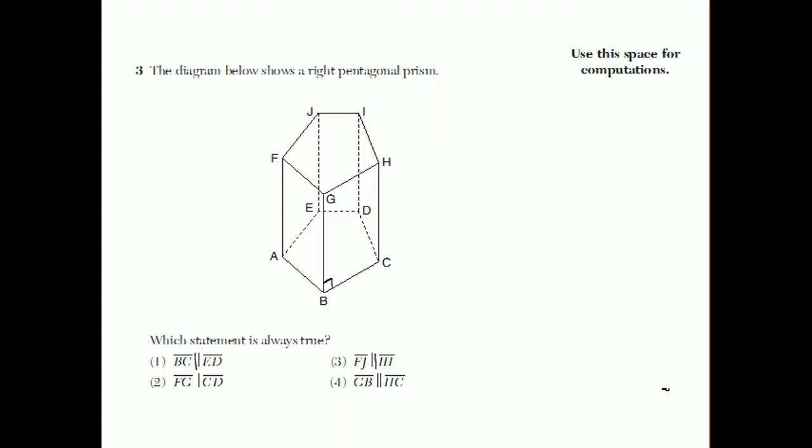Does BC have to be parallel to ED? Not necessarily. BC and ED are on the same sort of plane on the bottom and they would intersect there. They're not parallel. The things that are parallel, let's see, FG and CD, although they don't look like they're going to meet, they're not officially parallel because I don't think they're in the same plane. FJ and HI, those look like they would intersect if I continued them. And all that's left is GB and HC, and these are parallel. They're both perpendicular to line BC, so when two lines are perpendicular to the same line, they are going to be parallel to each other, and the answer is choice four.